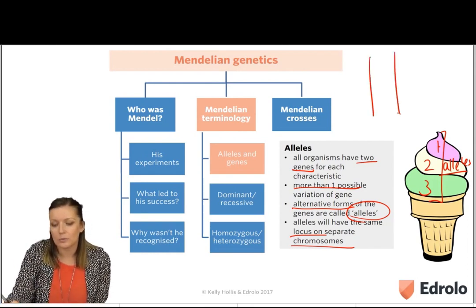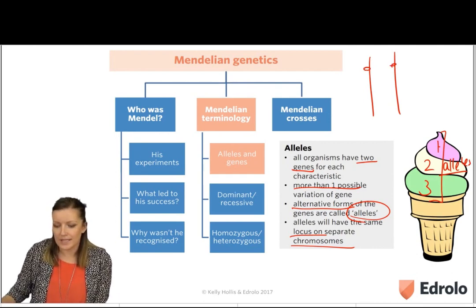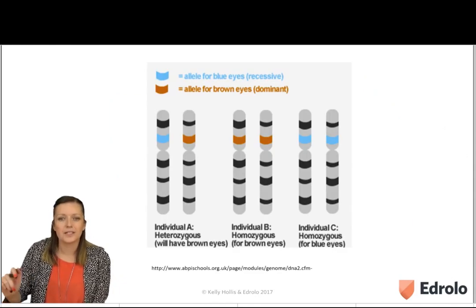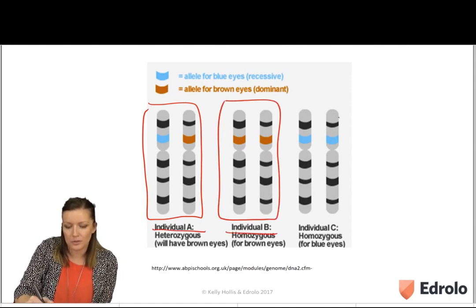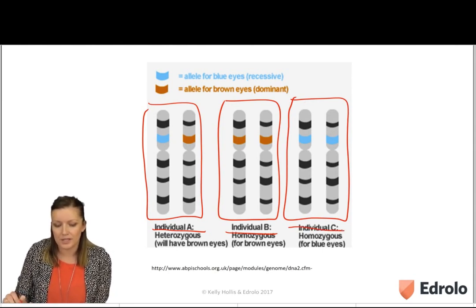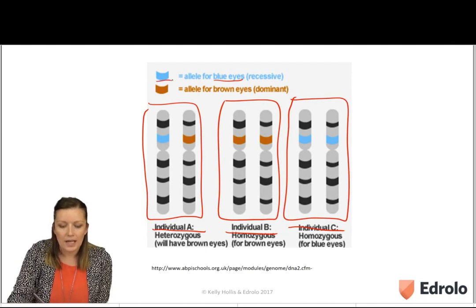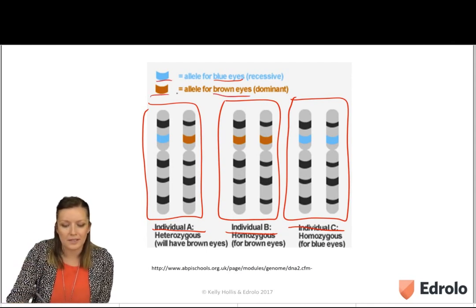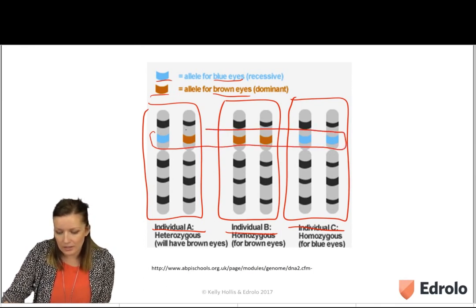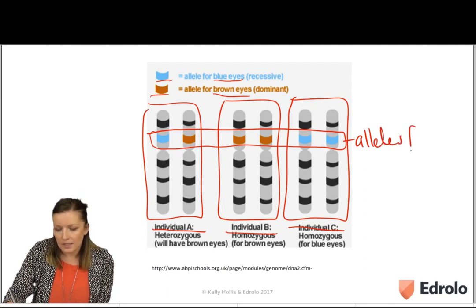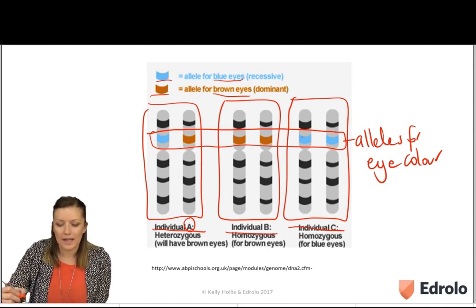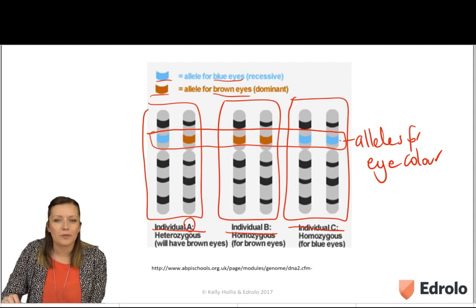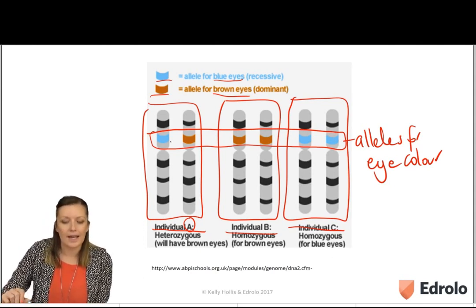With alleles, we'll have two genes with two alleles on the same location. Looking at the next slide, this shows us the chromosomes — one pair for individual A, a second pair for individual B, and a third pair for individual C. We can see that blue eyes are colored blue and brown eyes are colored brown, and this section here is where the alleles for eye color exist. Individual A has one blue and one brown allele, individual B has two brown alleles, and individual C has two blue alleles. As we move forward, we'll look at what this means and how it results in different eye colors.